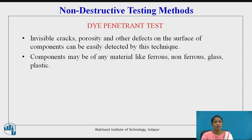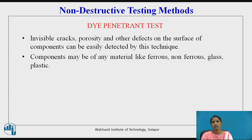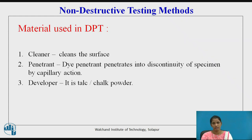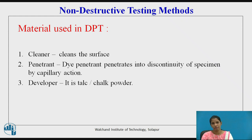The first method is the dye penetrant test. In this, the dye is applied on the specimen. Invisible cracks, porosity, and other defects can be easily detected by this technique. Components may be of ferrous, non-ferrous, glass, or plastic. The materials used are: first, a cleaner that cleans the surface, removes irregularities and corrosion; second, a penetrant — the dye penetrant penetrates into the discontinuity or irregularities present on the specimen by capillary action; and third, a developer, which is a chalk or chalk powder.